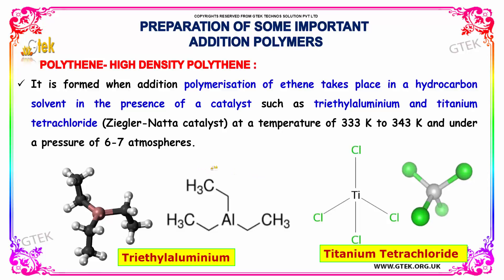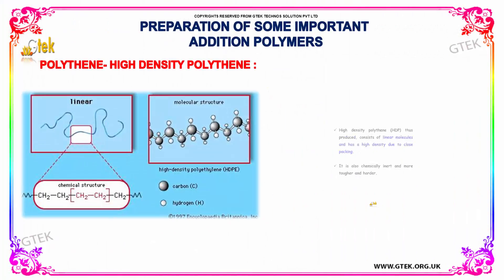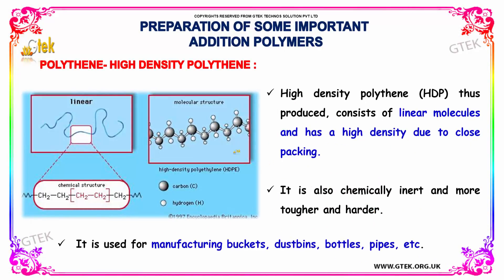The following diagram depicts the 3D image of triethylaluminium, and this is the diagram for titanium tetrachloride. High density polyethylene thus produced consists of linear molecules and has a high density due to close packing.